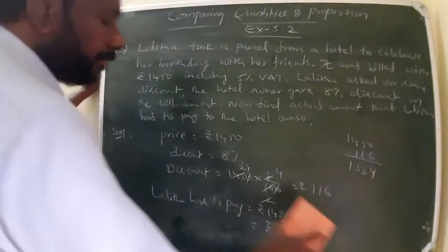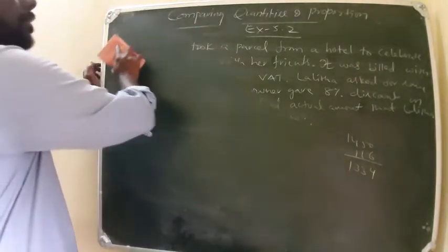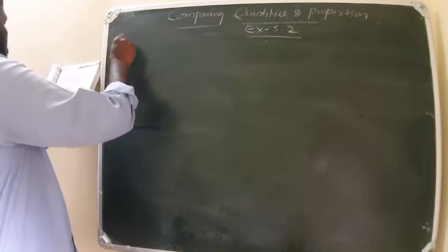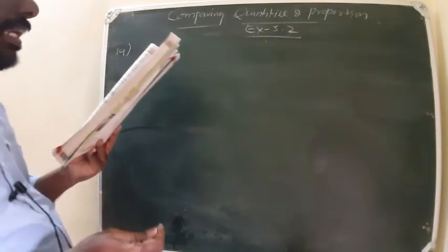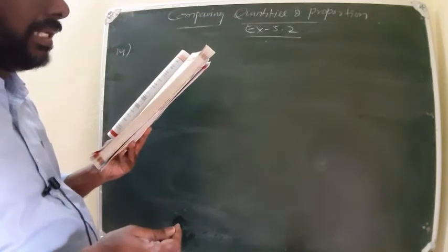Now we will see the next question, 14th question. If VAT is included in the price, find the original price of each of the following.